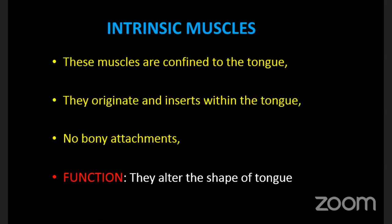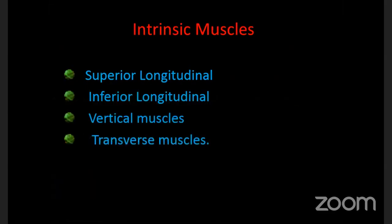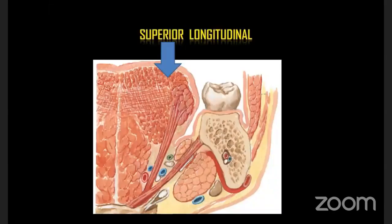The intrinsic muscles have no bony attachment whatsoever. There are four intrinsic muscles: superior longitudinal, inferior longitudinal, vertical, and transverse. Longitudinal means extending antero-posteriorly from tip to root. Vertical means from dorsal to ventral surface. Transverse means from one lateral margin to the other. In a coronal cross-section, the upper fibers are superior longitudinal, lower fibers are inferior longitudinal, transversely running fibers are the transverse, and vertically running fibers are the vertical muscle.